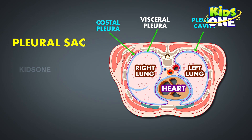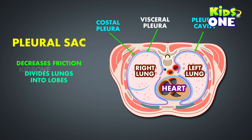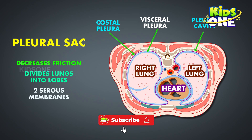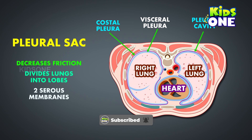The movement of the lungs encounters little friction thanks to the pleural sac. The pleurae are two serous membranes — one lining the inner wall of the ribcage and one resting on the surface of the lungs. Between these two membranes is the pleural cavity, which contains pleural fluid for lubrication.